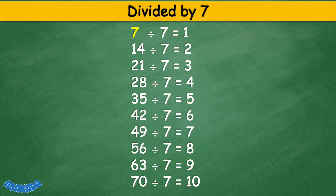Divided by 7: 7 divided by 7 equals 1, 14 divided by 7 equals 2, 21 divided by 7 equals 3, 28 divided by 7 equals 4, 35 divided by 7 equals 5, 42 divided by 7 equals 6, 49 divided by 7 equals 7, 56 divided by 7 equals 8, 63 divided by 7 equals 9.